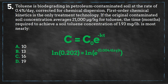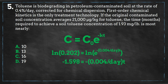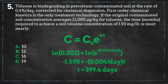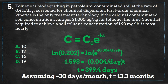What we're left with is negative 1.598 equals negative 0.004 times T. Solving for T gives us 399 days, and assuming 30 days per month, that leaves us with 13.3 months, which is closest to answer B.